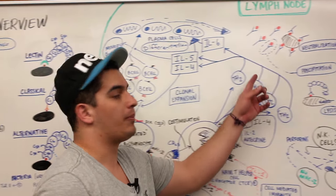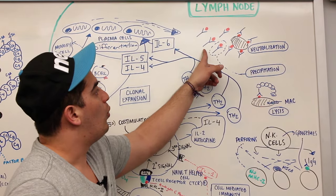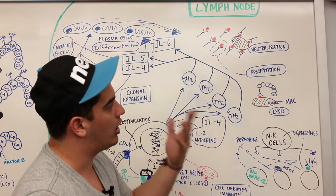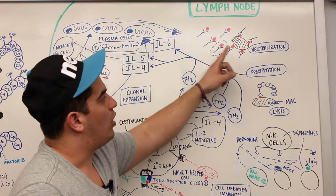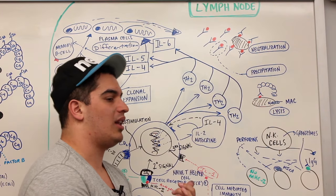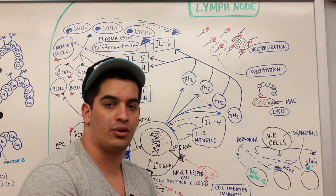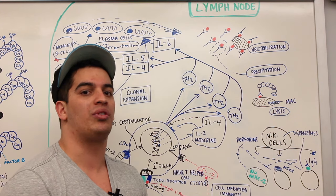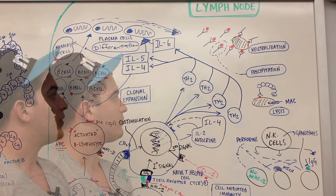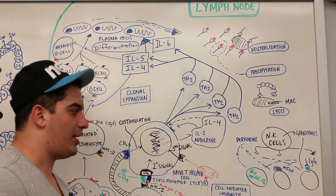The plasma cells respond to interleukin-5 and interleukin-6 and produce antibodies. What will those antibodies do? These antibodies can bind with these foreign antigens and cause neutralization reactions, precipitation reactions, lysis, agglutination reactions, and opsonization. We'll go into more detail on those in antibodies.